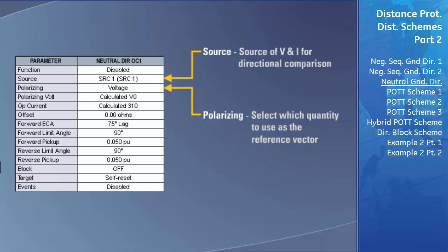If you select both current and voltage as the reference vector, the element will perform all directional calculations twice — once using the voltage and once using the current. If there is ever a discrepancy in direction between the calculations performed using voltage and those performed using current, the neutral directional overcurrent element will turn on the forward directional flag.